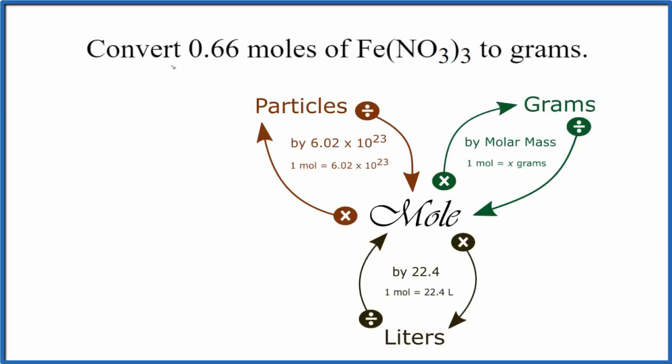In this video we'll convert 0.66 moles of Fe(NO3)3 to grams. This is iron(III) nitrate and this 0.66 is just a number I made up for this problem. So we have our 0.66 moles of iron(III) nitrate and we want to convert moles to grams.